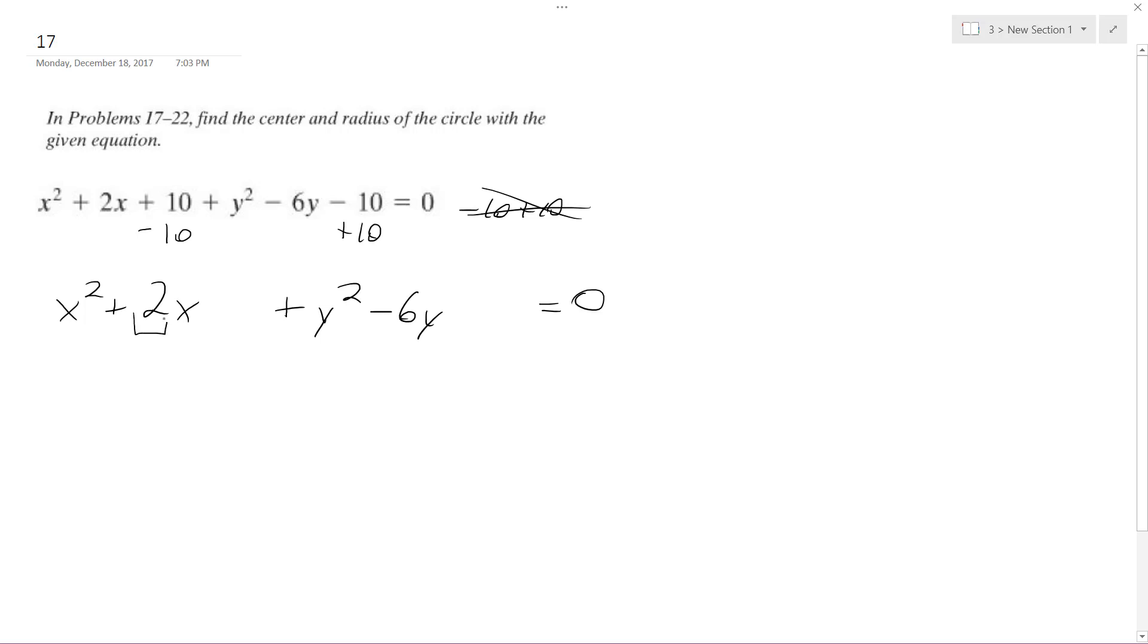Complete the square. Half of this middle term squared is plus 1, and half of negative 6 is negative 3 squared, which is plus 9. So I get plus 1 plus 9.